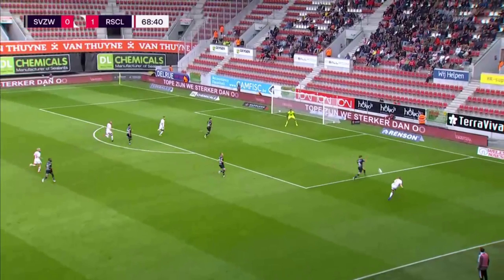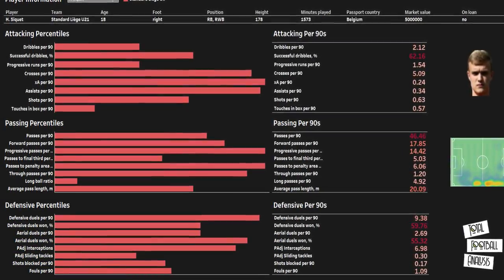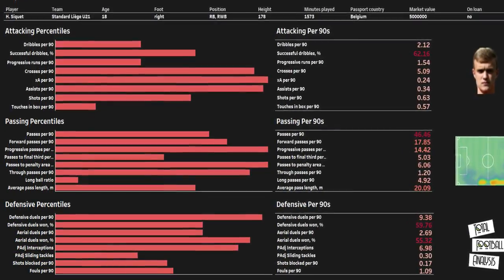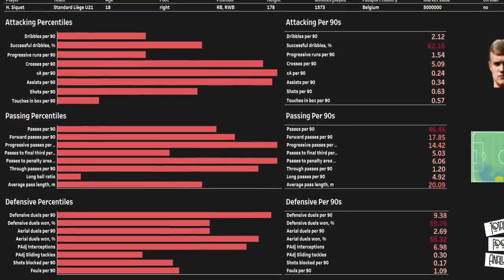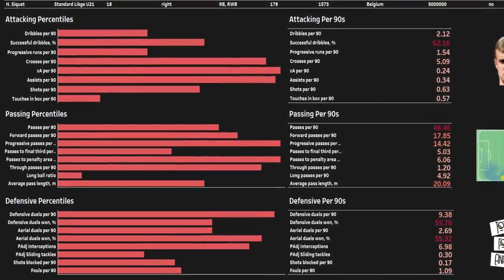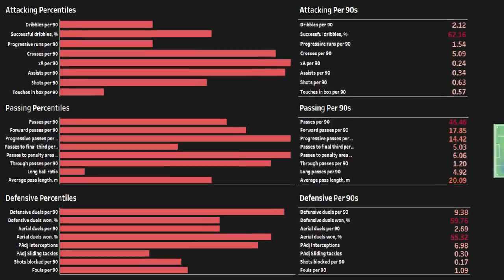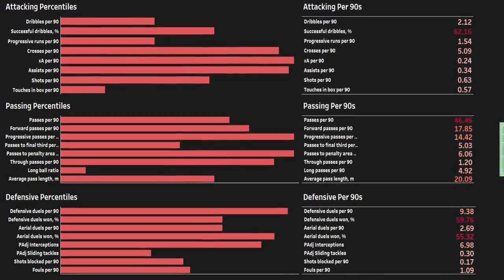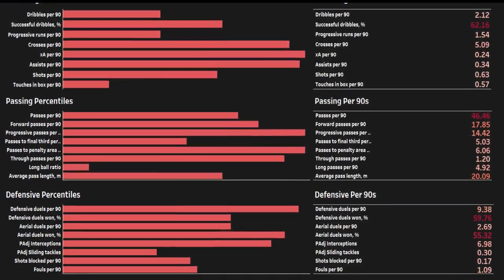Defensively, Secuert actually has a stronger output than Trent, with 9.38 defensive duels per 90 at a 59.76% success rate, 2.69 aerial duels per 90 at a 55.32% success rate, and 6.98 possession-adjusted interceptions per 90.